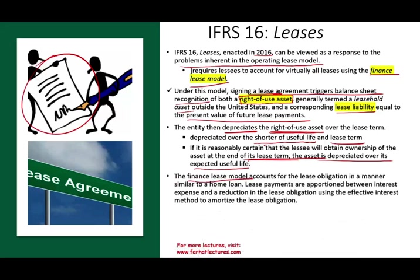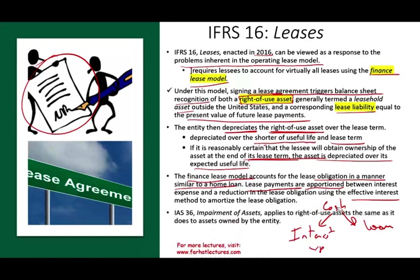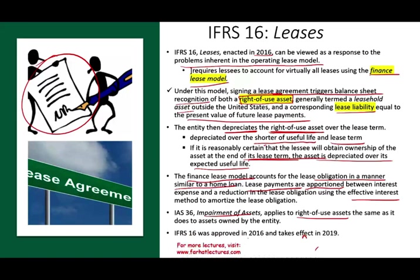The finance lease model accounts for the lease obligation similarly to a home loan: each payment is split between interest expense and reduction of the principal using the effective interest rate method. Also, IAS 36 — impairment of assets — applies to right-of-use or leasehold assets just like any regular asset. IFRS 16 was approved in 2016 and takes effect in 2019.